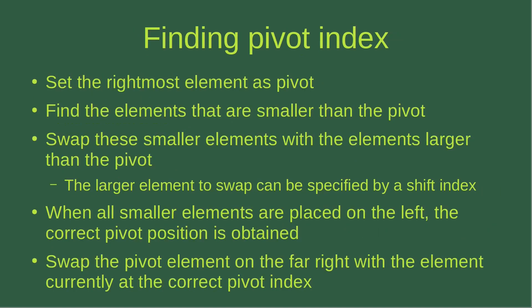Now let's look at the way of finding out the pivot index. First, we set the rightmost element as the pivot. Then we find the elements that are smaller than the pivot and swap them with elements that are larger than the pivot, using a shift index to track positions. When all smaller elements are placed on the left, the correct pivot position is obtained. We then swap the pivot element on the far right with the element at the correct pivot index.